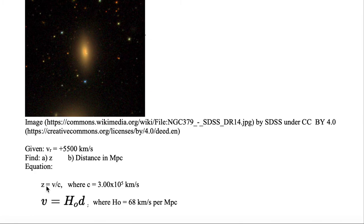We're given the equation for z and v. For z, the redshift parameter, z is equal to v, the radial velocity, divided by c, the speed of light, where the speed of light c in this example is going to be 3.00 times 10 to the 5th km per second.